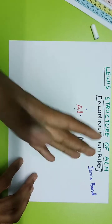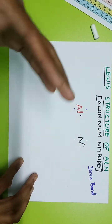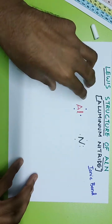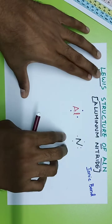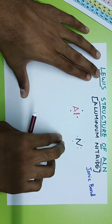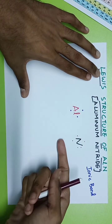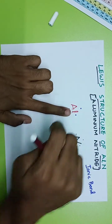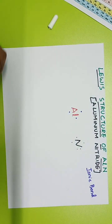Nitrogen will always tend to grab electrons from aluminum. Nitrogen receives the electrons, which means nitrogen will show a negative charge, whereas aluminum donates the electrons, which means it shows a positive charge. So that's what we are going to observe now.